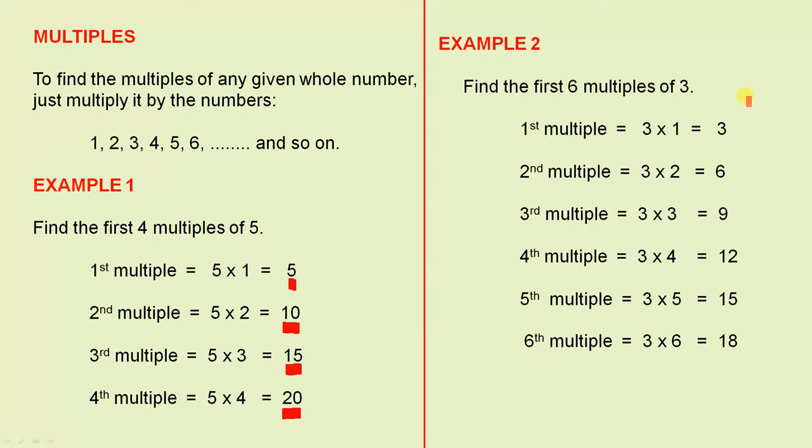Example 2. Find the first six multiples of 3. The first multiple, 3 times 1 is 3. The second multiple, 3 times 2 is 6.